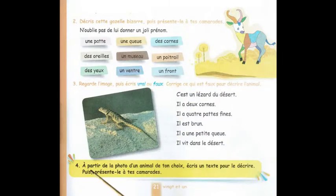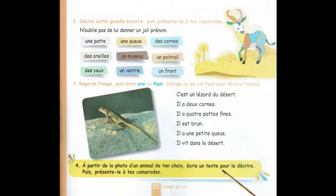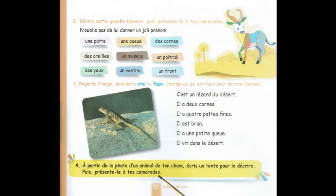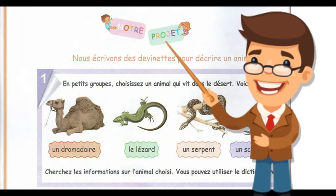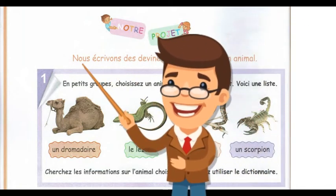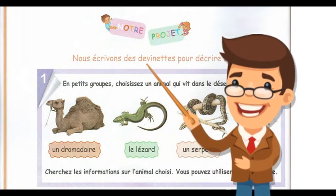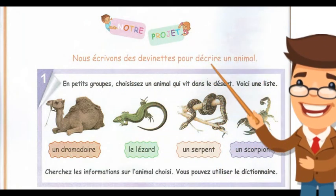À partir de la photo d'un animal de ton choix, écris un texte pour le décrire, puis présente-le à tes camarades. Notre projet : nous écrivons des devinettes pour décrire un animal.